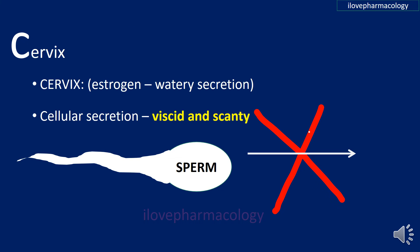Regarding the effect of progesterone on the cervix: progesterone converts the watery cervical secretion — which is produced by estrogen — into a viscid and scanty cellular secretion. This makes the cervical environment hostile to sperm penetration, thereby preventing it.